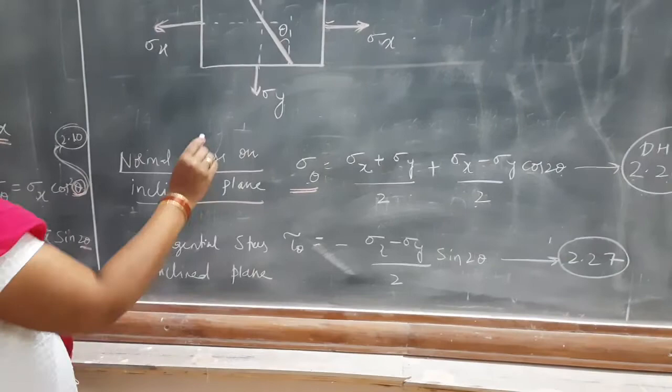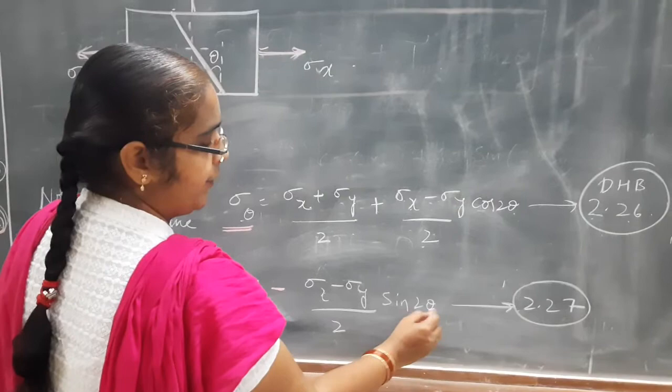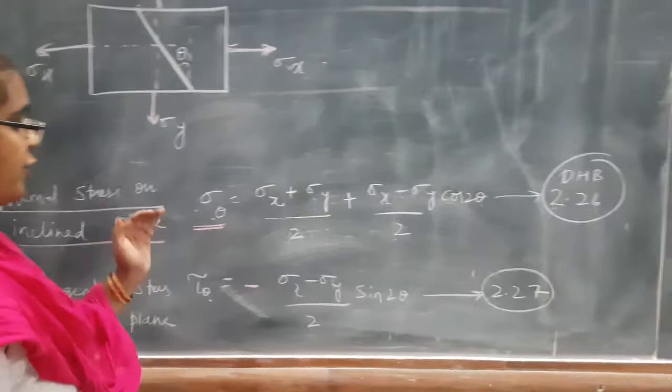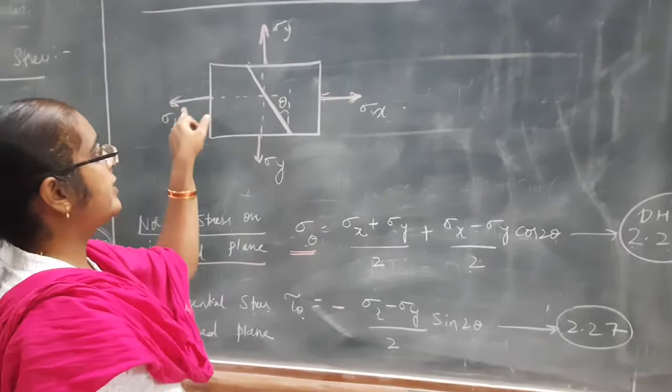Similarly, if you want to find the shear stress on the inclined plane, tau theta is equal to minus sigma x minus sigma y by 2 into sin 2 theta. Its equation number is 2.27 in your data handbook. Using these two equations, we can find the normal stress and shear stress on this plane when the member is subjected to both sigma x and sigma y.